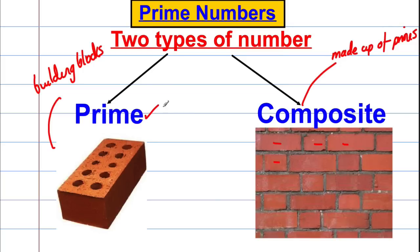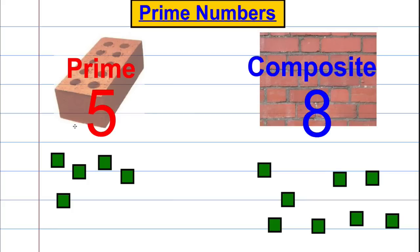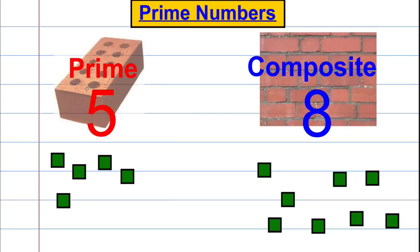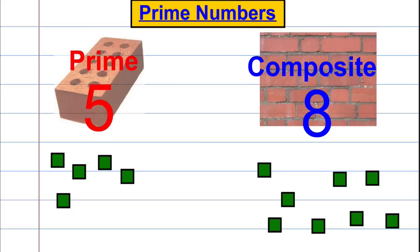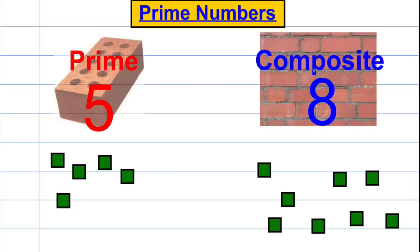So these are two terms we're going to learn: prime and composite. Now, I'm going to tell you that we have a prime number here — a brick, a building block — and it's five. And we have a composite number here, which is like the wall made up of bricks, and I'm going to say it's eight. I'm going to show you what I mean by them being prime and composite.